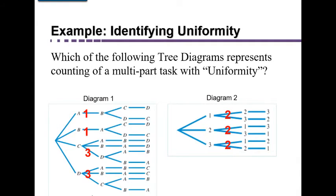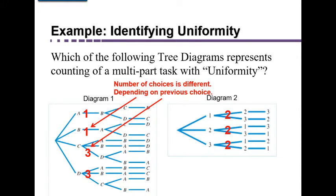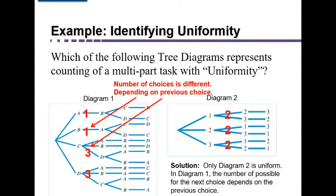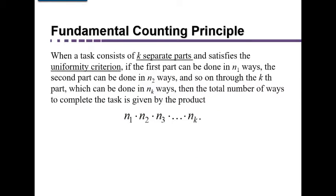Diagram two has uniformity, where the number of outcomes possible in the next part does not depend on which option we chose previously. When the number of choices is different depending on the previous choice, you do not have uniformity. Only diagram two is uniform, and this is important because it helps us find a shortcut.